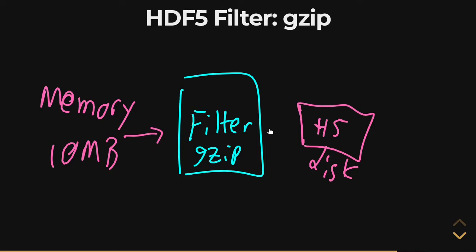GZIP is going to compress that data and write something less than 10 megabytes to disk. It's probably going to write something like maybe seven megabytes or so. That's not a bad number. If you're lucky, depending on the structure, you might get more—maybe only five or four megabytes written. But it will be less.